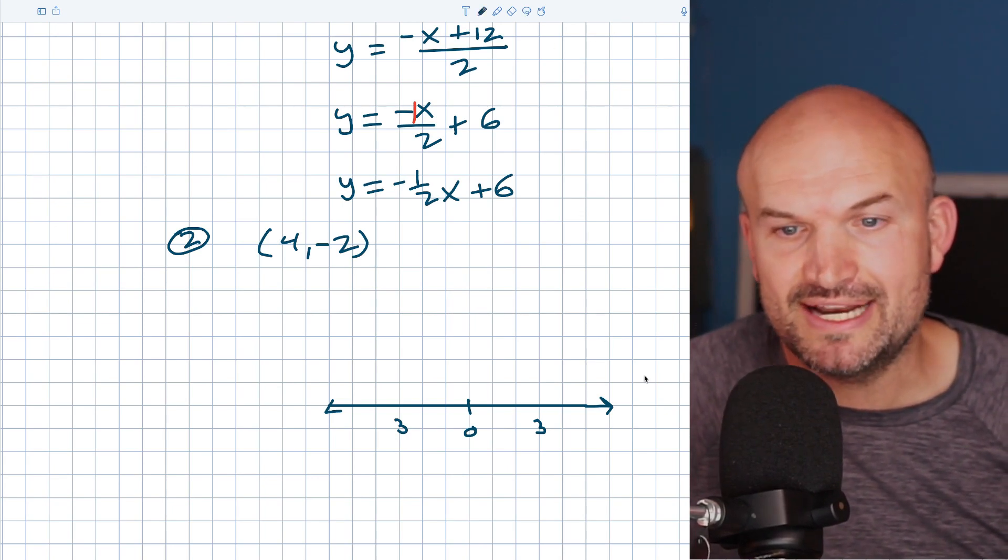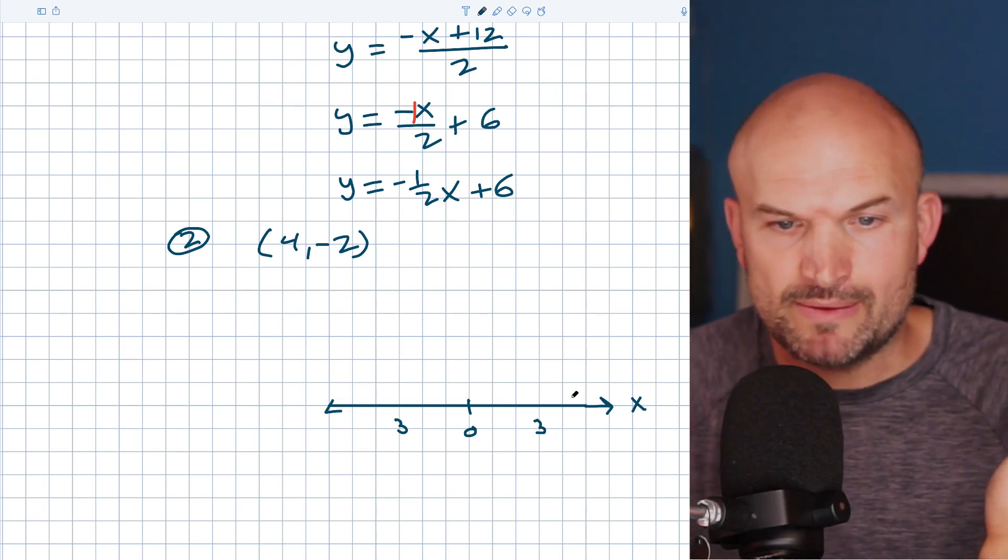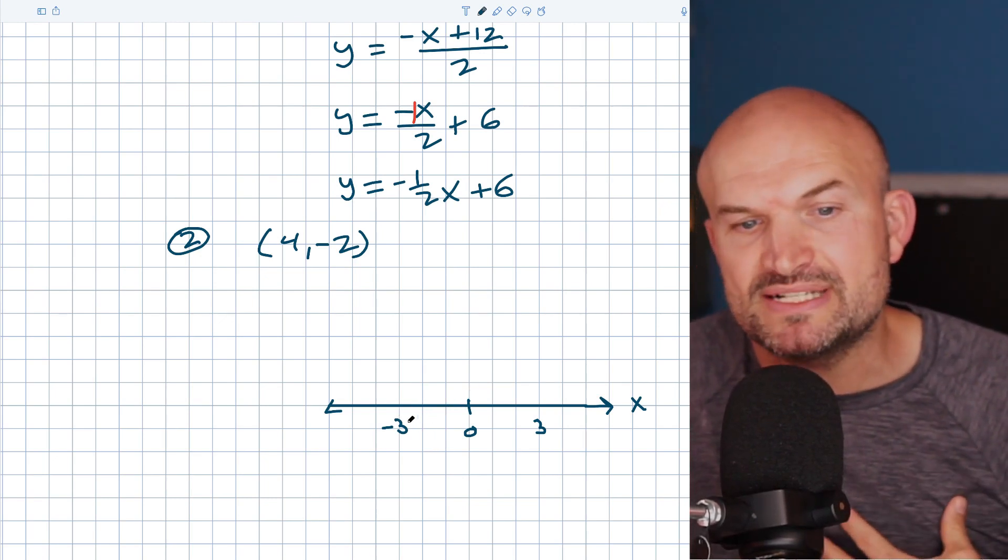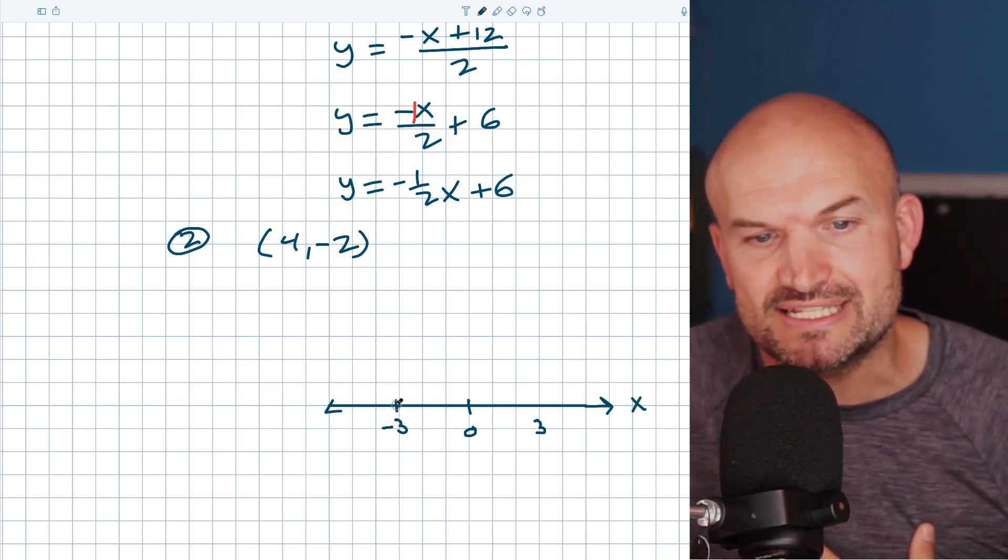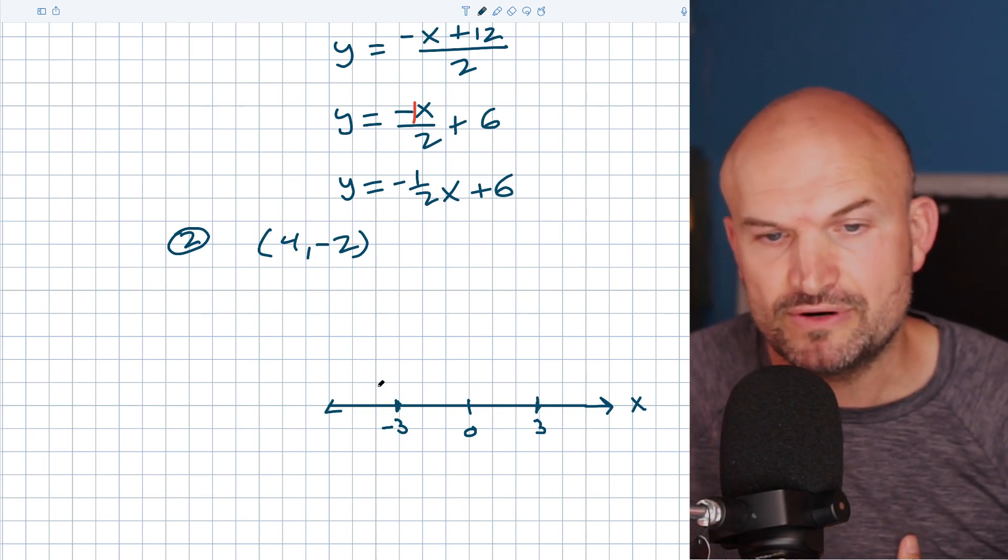So this is what we call our x-axis, right? So we can say that is going to be the x-axis that is going to be our horizontal axis. So if I move to the right, that's positive. If I move to the left, that's going to be negative. These numbers represent the distance from zero, a horizontal distance from zero.